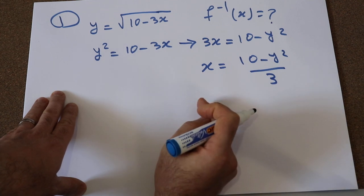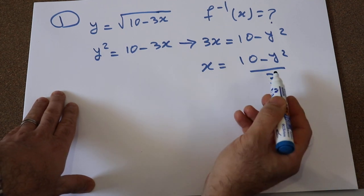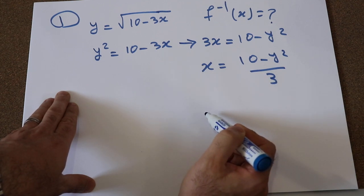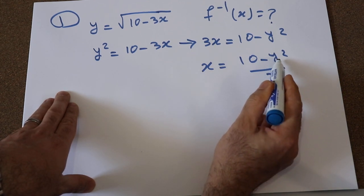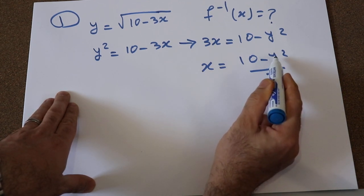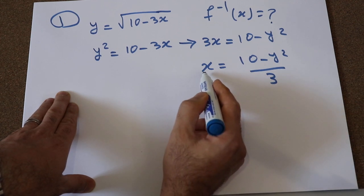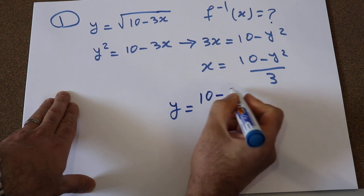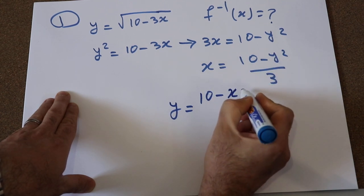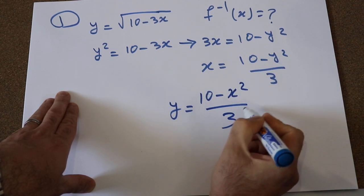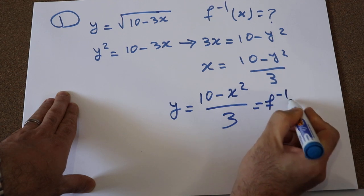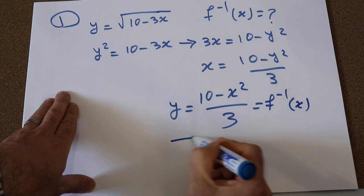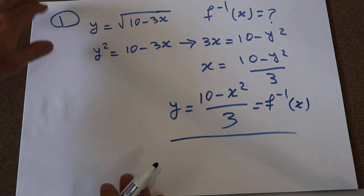Step two is to interchange x and y. That means wherever you see x, you convert it to y, and wherever you see y, you convert it to x. So therefore, the result is y equals (10 minus x²) divided by 3. And that is the inverse of this function. That's example number one.